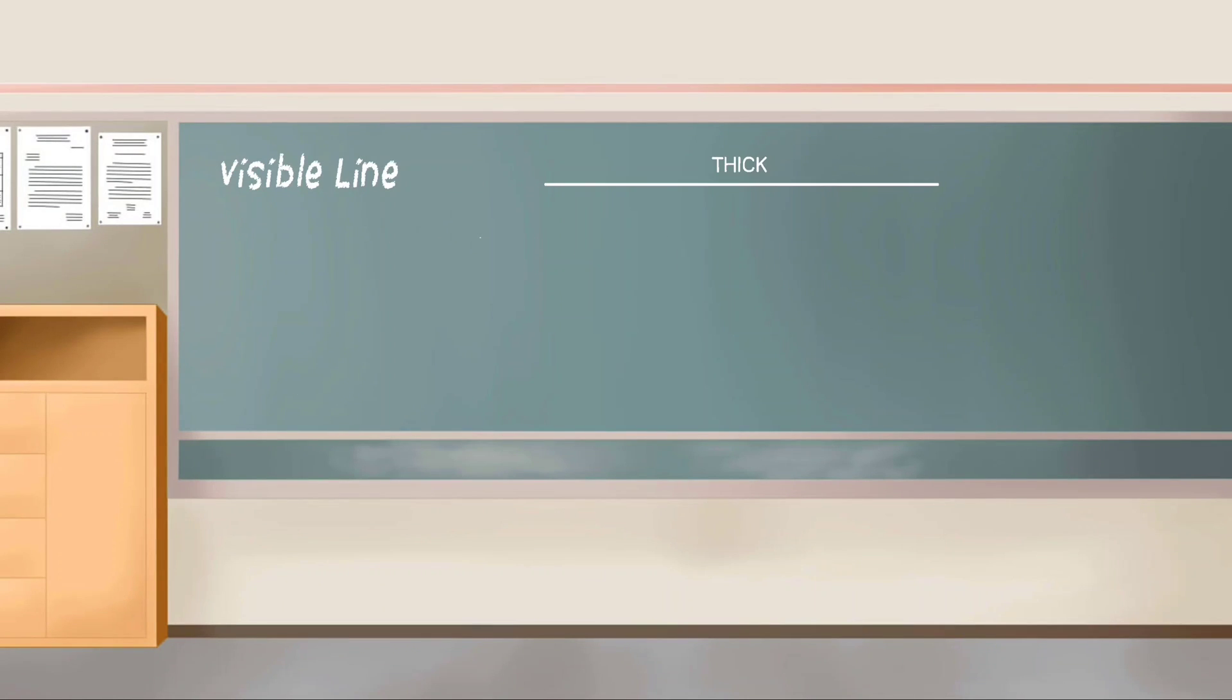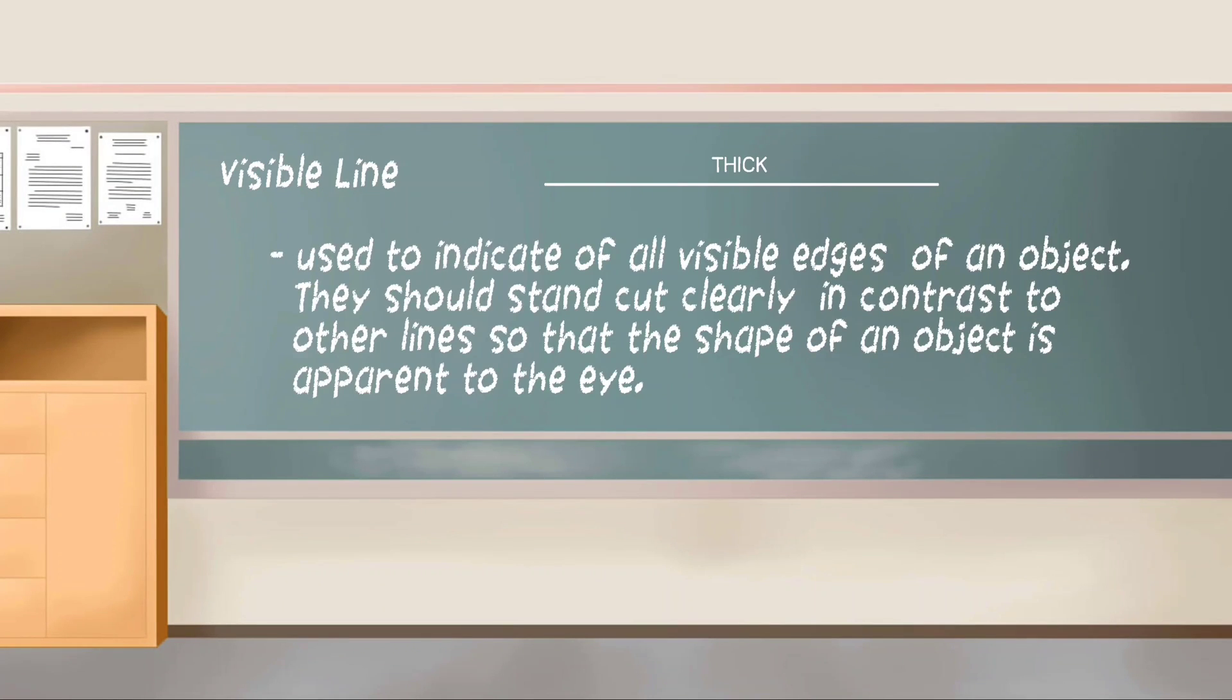Visible line. It is a thick line used to indicate all visible edges of an object. They should stand out clearly in contrast to other lines so that the shape of an object is apparent to the eye.